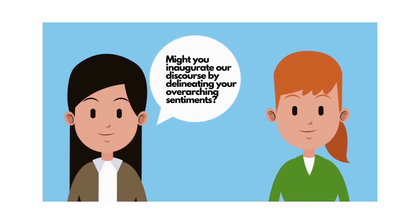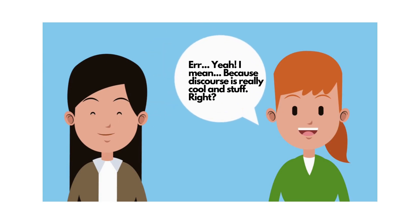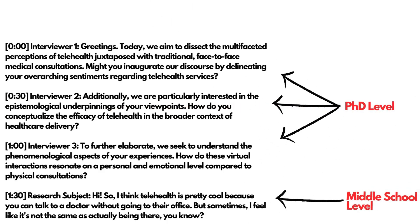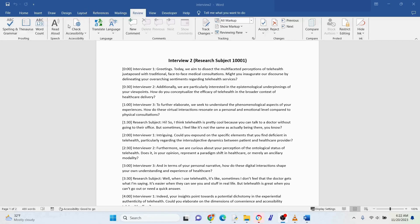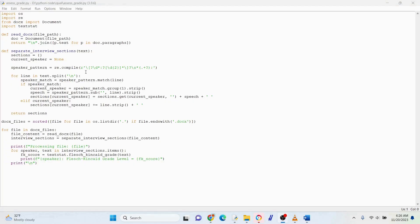When conducting interviews, especially qualitative interviews where data are being collected, it's good practice for interviewers to speak at a similar level to those they are interviewing. Thankfully, we have tools to assess the grade level of all individuals by analyzing interview transcripts. To do that, we can use something called a Flesch-Kincaid grade level score, which is used for exactly this purpose. In Microsoft Word we can do this, but the problem is without writing some code we can't separate each person into their own buckets to get their grade level.